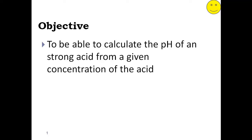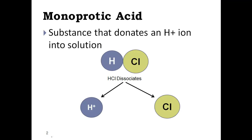So this lesson is all about pH. Prior to calculating pH, let's set some ground rules. Everything is about the hydrogen ion concentration. A substance is called an acid if it donates hydrogen ions into solution. So HCl is dissolved in water, and when that happens it dissociates — it splits — and when it splits it forms an H+ ion.